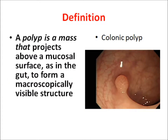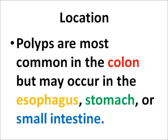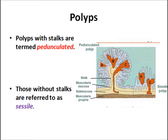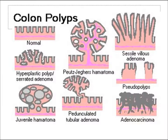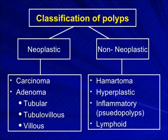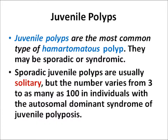We will discuss the polyp. A polyp is a mass that projects above a mucosal surface, as in the gut, to form a macroscopically visible structure. The most common location is the colon, but they may occur in the esophagus, stomach, or small intestine. They may have a stock, termed pedunculated, or be without a stock, referred to as sessile. They can be classified according to their shape and according to whether they are neoplastic or non-neoplastic.